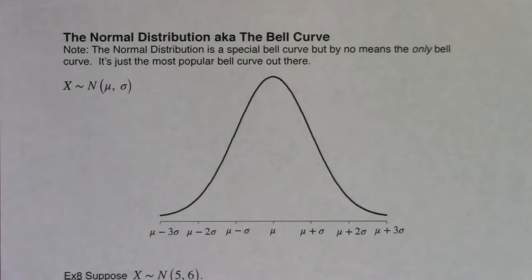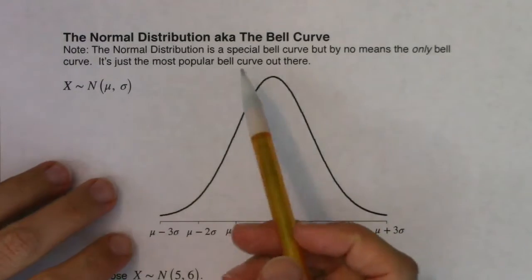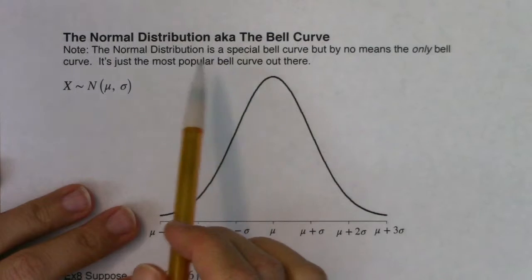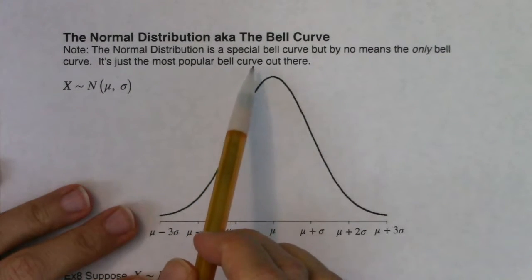Okay, gang, let's take a look at the normal distribution, or we refer to that a lot of times as the bell curve. The normal distribution is a special bell curve. It's by no means the only bell curve, but it's definitely the most popular bell curve out there.